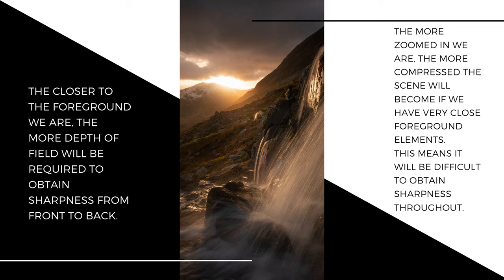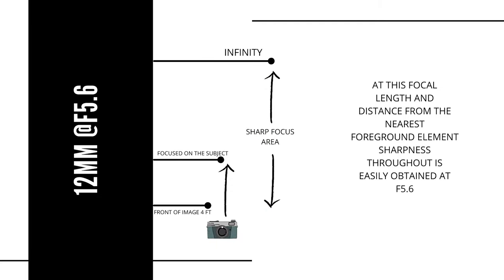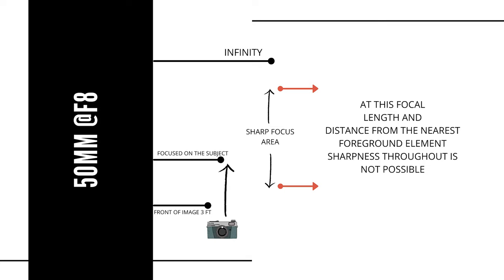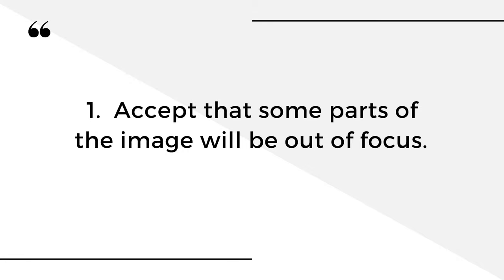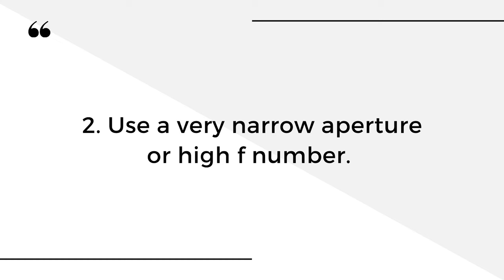Focal length is a big factor in how much of the scene we can get in focus. The acceptably sharp plane of focus becomes smaller the closer we get to foreground elements. The same applies when using a telephoto lens — with near foreground elements and distant mountains, the scene becomes compressed and the depth of field that is acceptably sharp becomes very narrow. At 12mm we should easily get everything in focus from front to back, sometimes even at a relatively wide aperture like F5.6. The more zoomed in we are and the closer to our foreground, the harder it is. That gives us three options: one, accept that some parts will be out of focus; two, use a very narrow aperture; or three, focus stack.